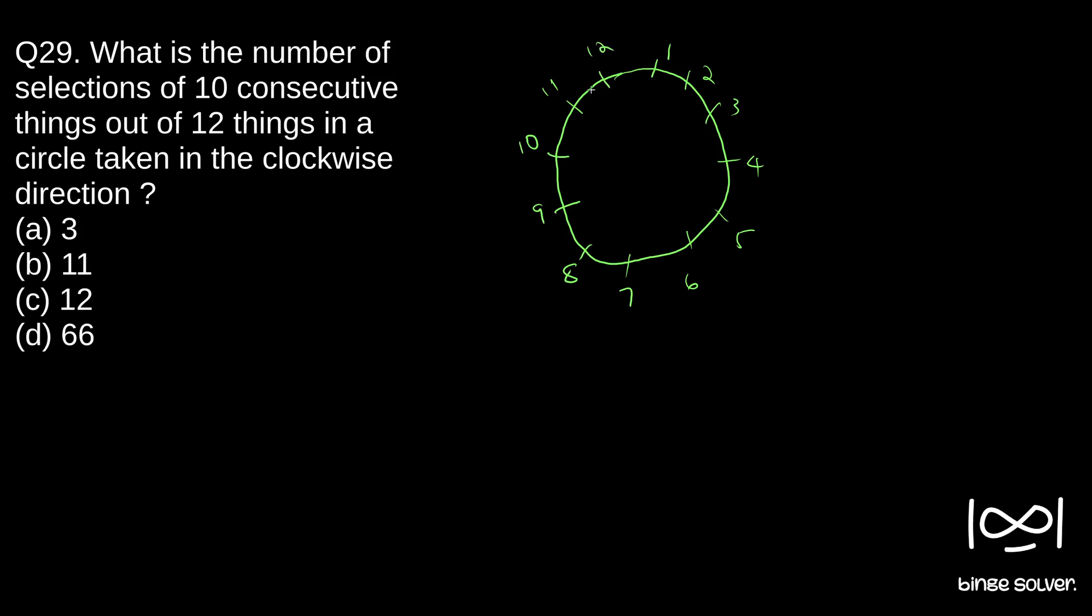So we have to select 10 consecutive things in the clockwise direction. So we have to find the number of selections that we can make in such a manner. So the moment we select a beginning person or beginning thing, we don't have much choice here.